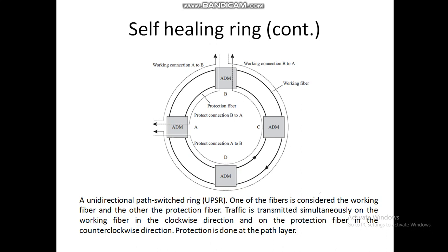There are different types of self-healing rings. The first one is a unidirectional path switching ring, which carries working traffic in only one direction. The different ring architectures differ in two aspects: the directionality of traffic and the protection mechanism used. In a unidirectional path switched ring, one fiber is the working fiber and the other is the protection fiber. Traffic is transmitted simultaneously on the working fiber in the clockwise direction and the protection fiber in the counterclockwise direction. Protection is done at the path layer.